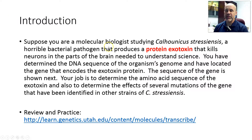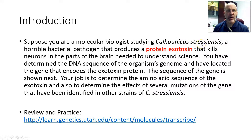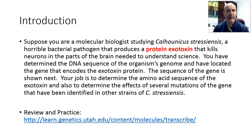We're going to have a pretend gene that we're working with, and we're going to pretend this is a gene from a bacterial organism, Calhounicus stressiensis. This is a gene on DNA coding for a protein exotoxin. When we get to Chapter 11, we'll talk more about exotoxins — they are proteins that pathogenic bacteria produce that are secreted, exit the bacterial cell, and get into our body fluids and bloodstream.